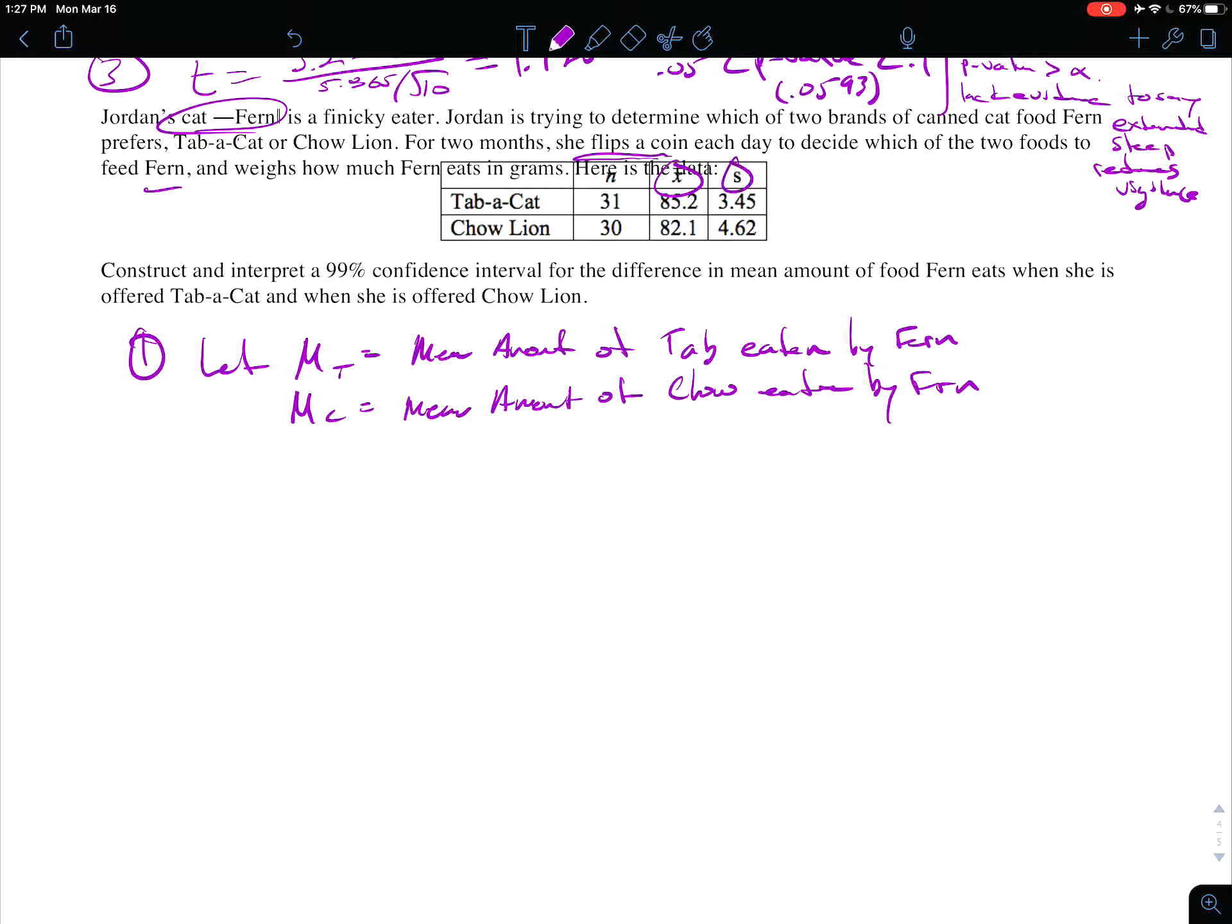Hopefully it was clear that we were defining mu there because we had x-bar for each group, we have s. This is not a proportions problem. This is a random assignment of two different brands of cat food and we're looking at the mean difference. So it wasn't paired in any way, it was randomly assigned on which day. So no pairing here, these are two distinct groups.